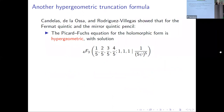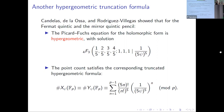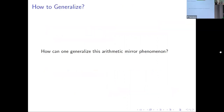Here's what Candelas, de la Ossa, and Rodriguez-Villegas showed: for the Fermat quintic and its mirror, which we already know have the same point count, the Picard-Fuchs equation for the holomorphic form is hypergeometric with a _4F_3 solution — four numerator parameters, three denominator parameters. The point count satisfies the corresponding truncated hypergeometric formula. We get an Igusa-type result for the quintic and its mirror, not just the quintic. This is one of the guiding ideas — we want to use mirror symmetry to prove arithmetic theorems like those we have for classical elliptic curves.